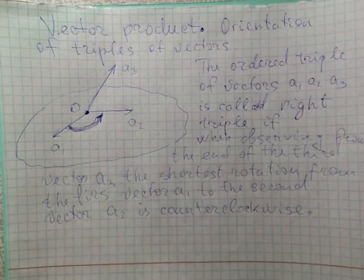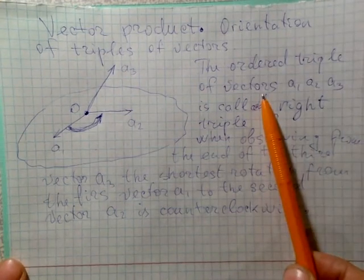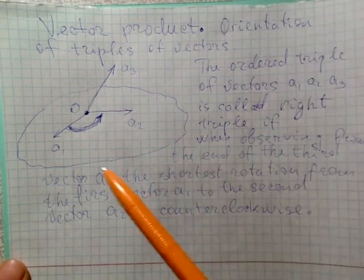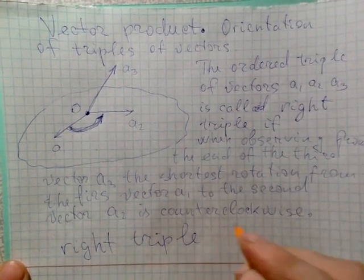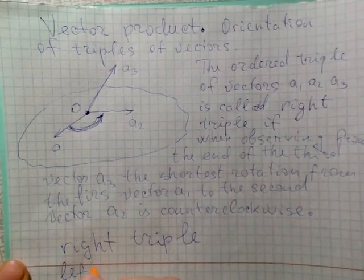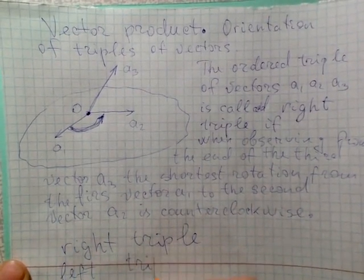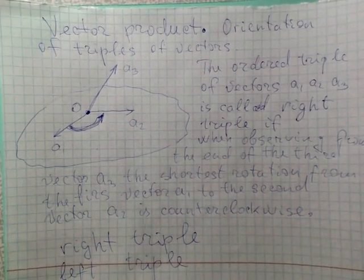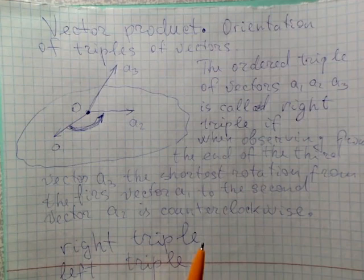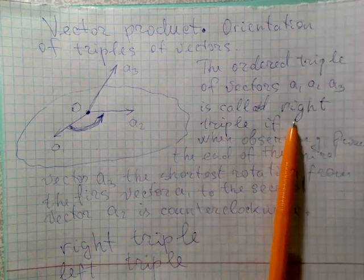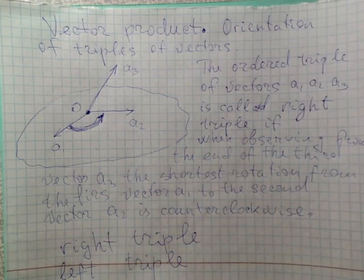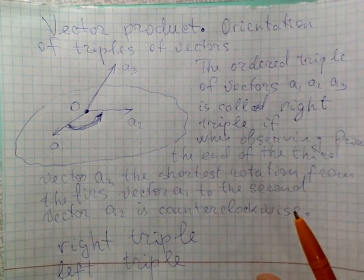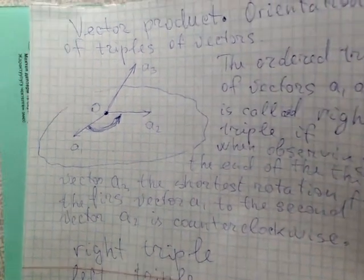So there are two sorts of triples of vectors which are not coplanar: right triples and left triples. A right triple is defined as above, and all other triples which are not right triples are left triples. Now we can proceed to defining the vector product.